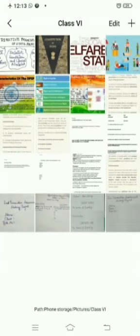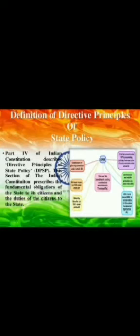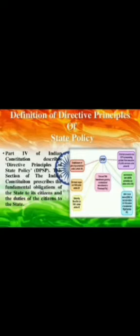Let us discuss certain features of these directive principles. Part 4 of the Indian Constitution describes directive principles as state policy — that means the government will initiate all these policies to provide facilities to citizens. This section of the Indian Constitution prescribes the fundamental obligations of the state to its citizens, and the duties of the citizens to the state. The directive principles describe what the state should provide to citizens, and what citizens should follow to get their rights and facilities. Both the government and citizens must follow these fixed principles.